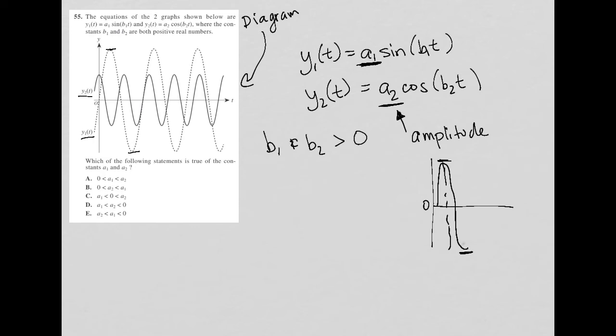So a small amplitude has a smaller distance away from that zero, whereas a large amplitude has a larger distance away from that zero center line. So what do we know?